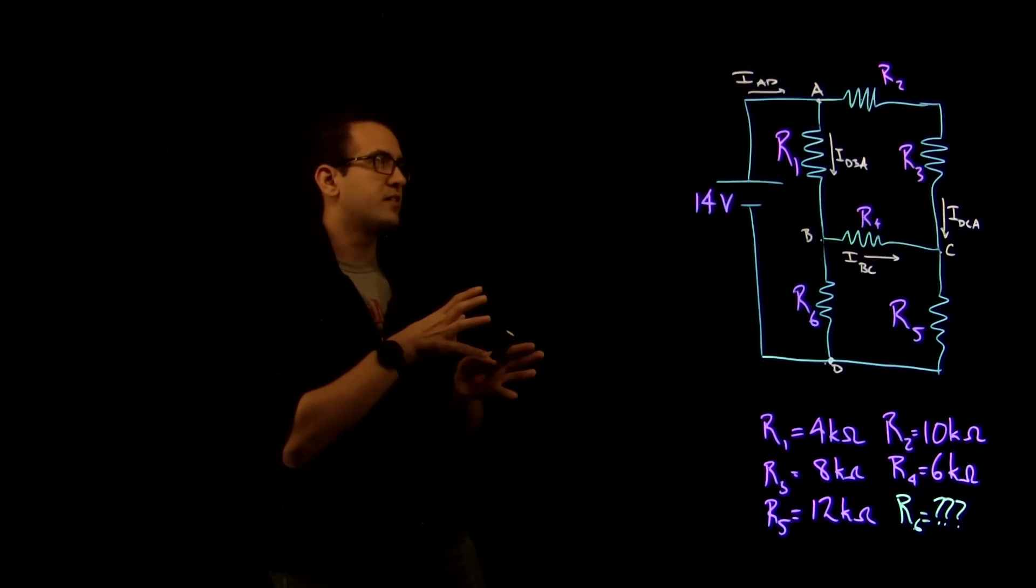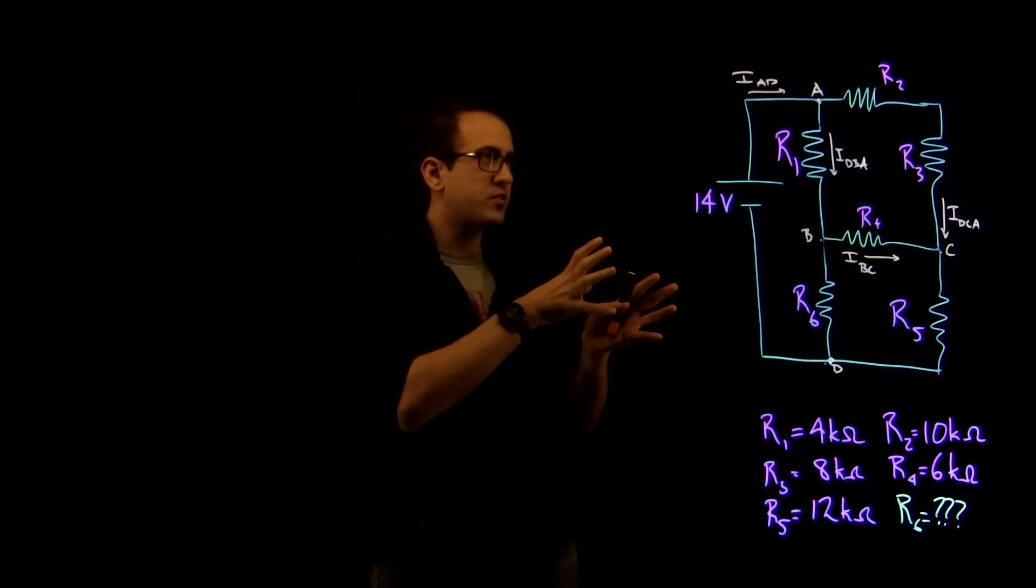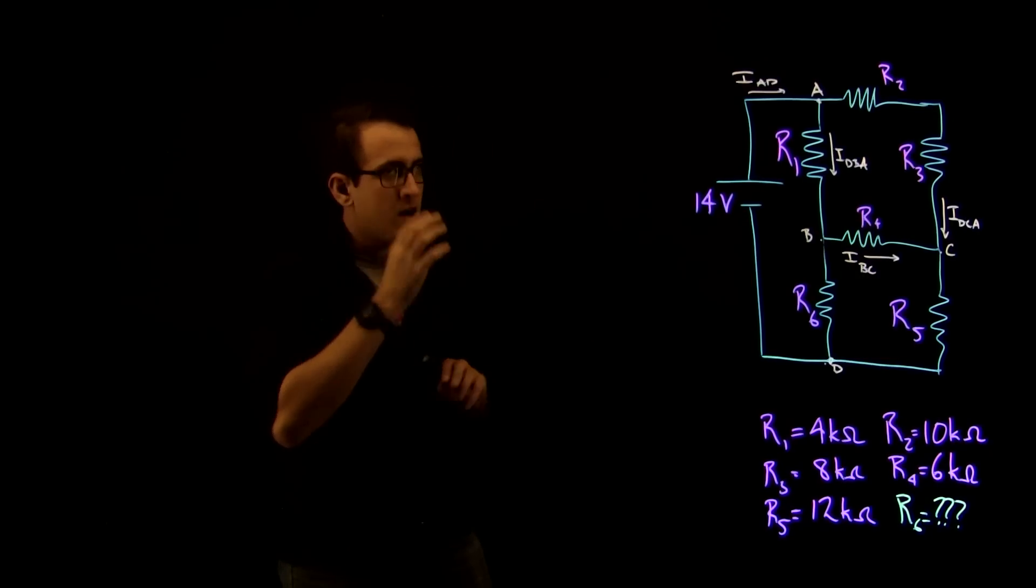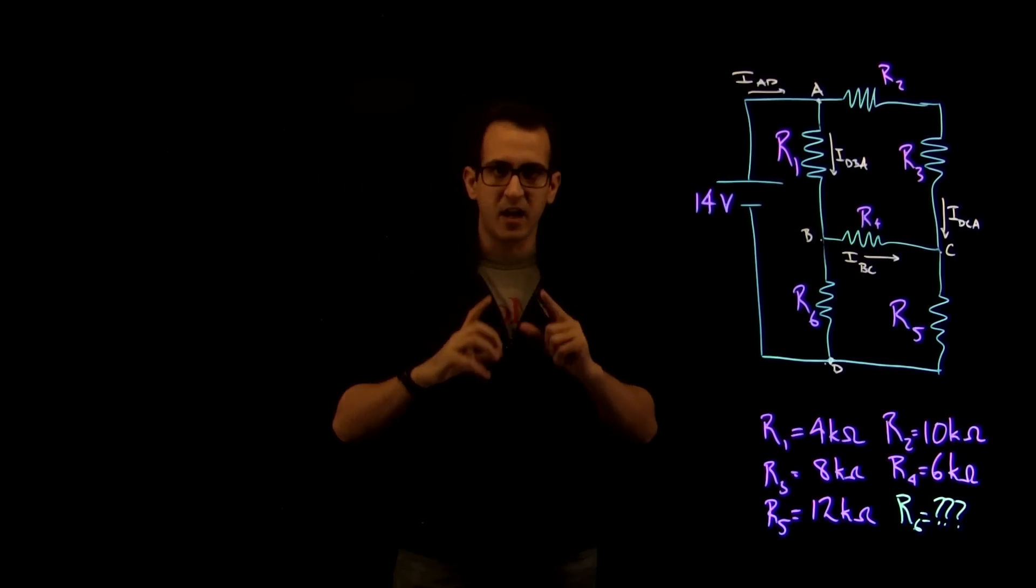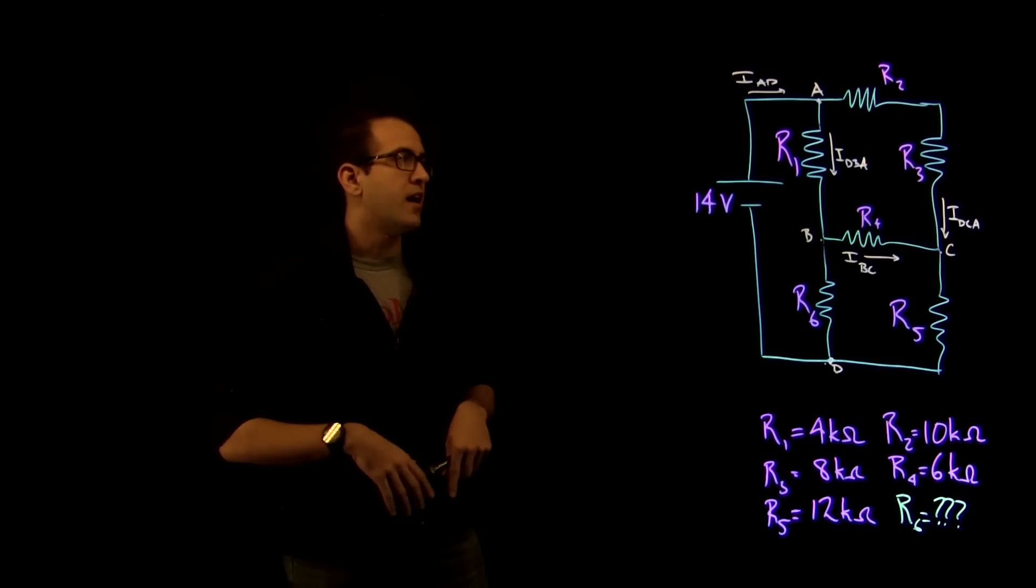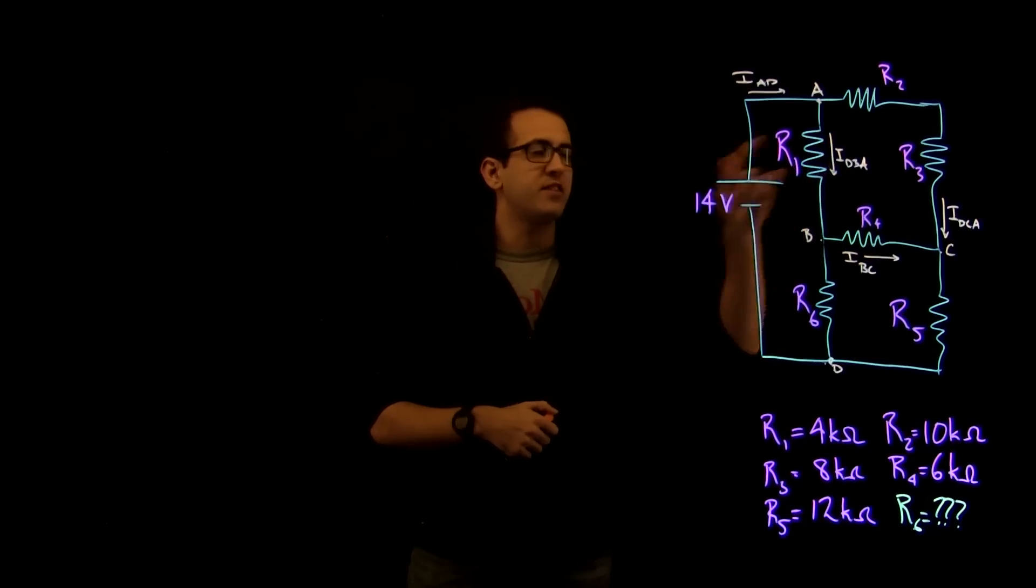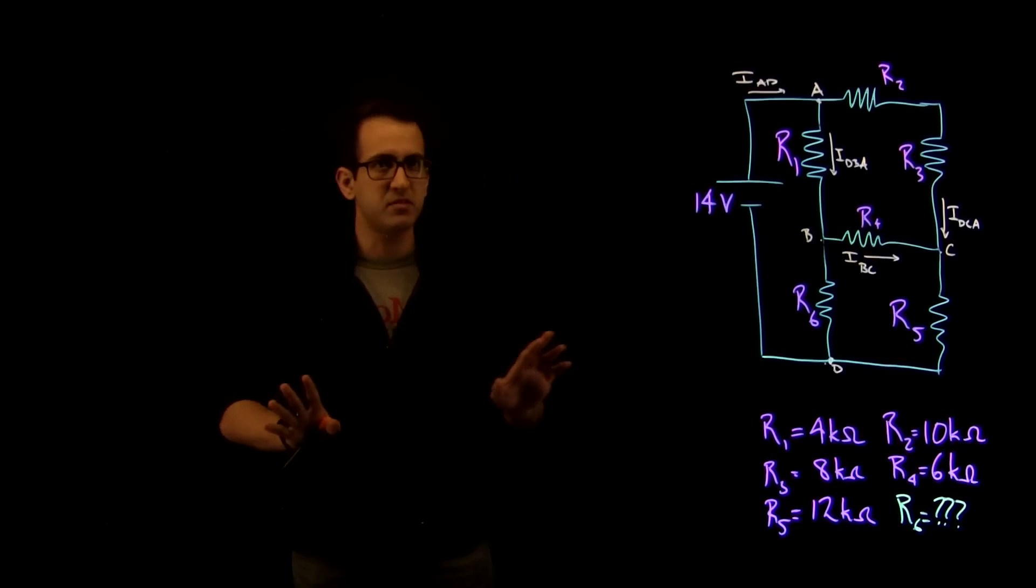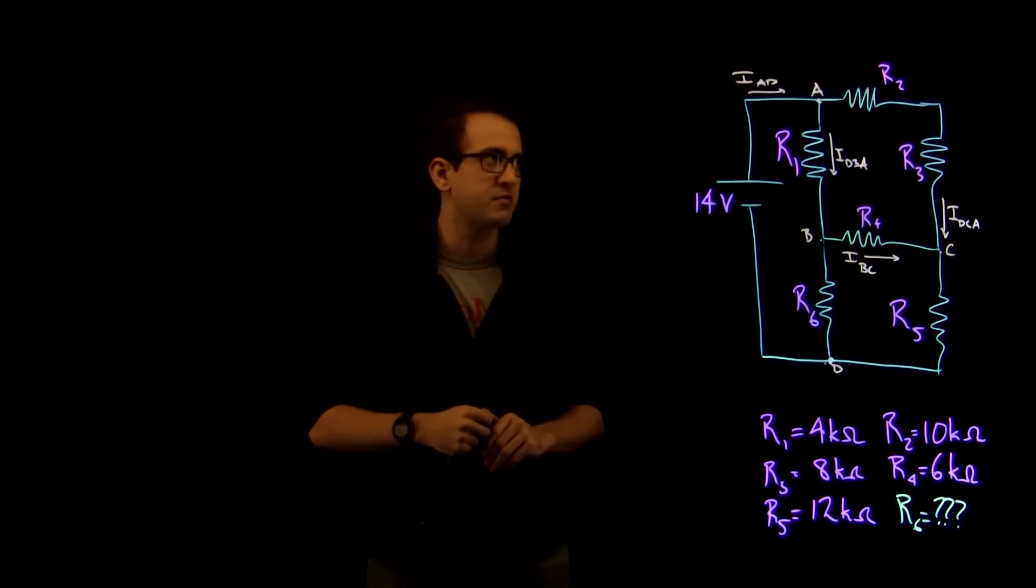So the first thing you're going to notice from this circuit here is that it's a classic Wheatstone bridge with a little bit of a twist. Rather than drawing it in that classic diamond shape of the Wheatstone bridge, I've drawn it as a rectangle. And we have an extra resistor here. We're going to simplify that and take care of it.